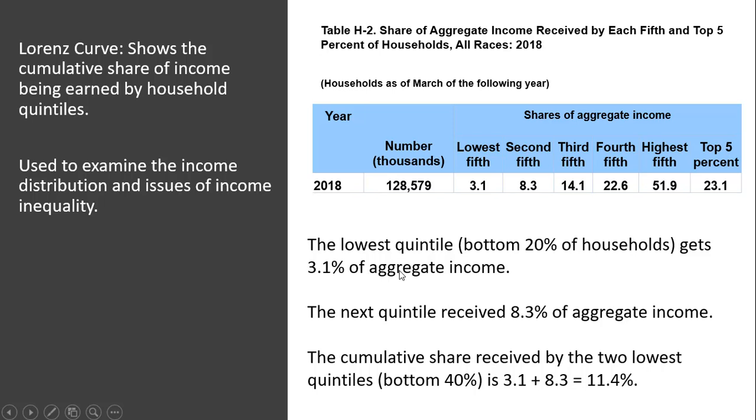The lowest quintile, or the bottom 20% of households, gets 3.1% of aggregate income. The next quintile received 8.3% of aggregate income.